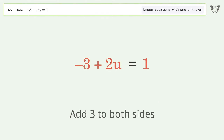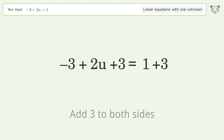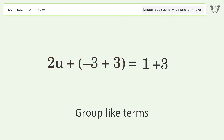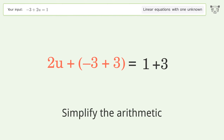Add 3 to both sides. Group like terms. Simplify the arithmetic.